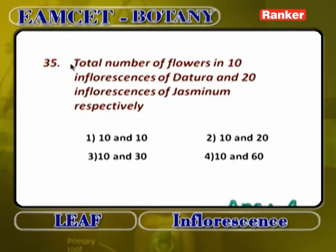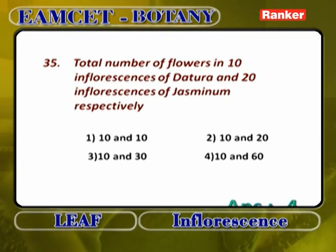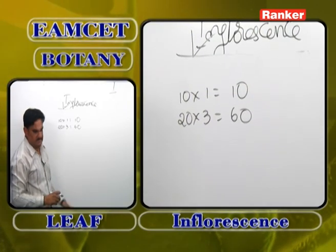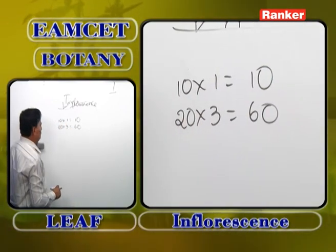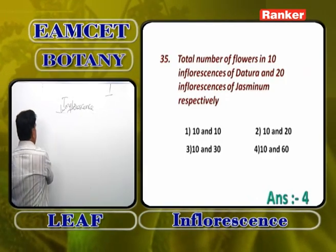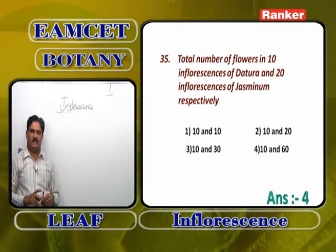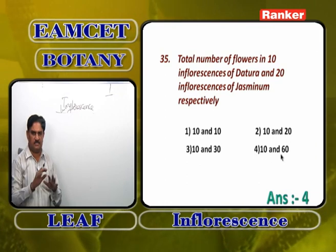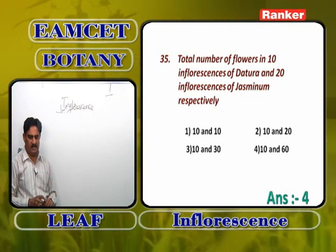Total number of flowers in 10 inflorescences of datura and 20 inflorescences of jasminum: datura is solitary cyme — 10 × 1 = 10 flowers. Jasminum is simple cyme — peduncle grows definitely, two lateral branches develop, they also become flowers, so 3 flowers per inflorescence — 20 × 3 = 60. Answer: 10 and 60.